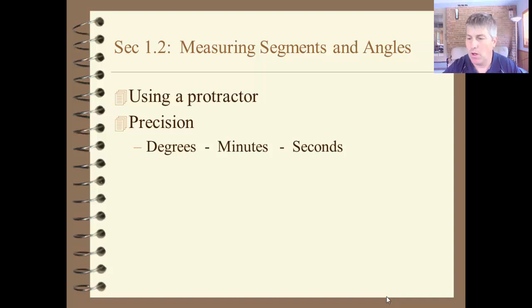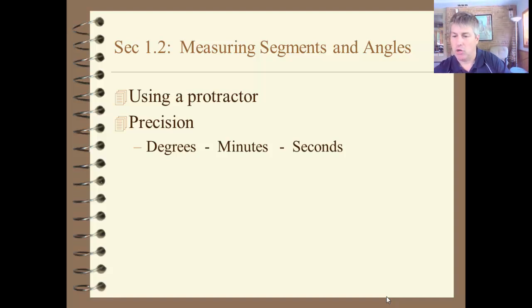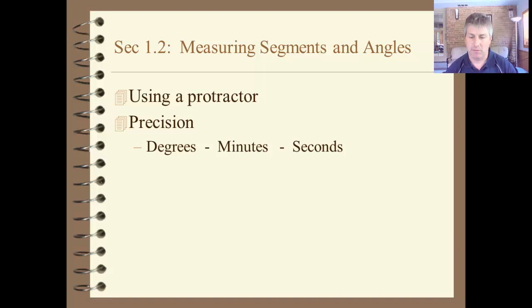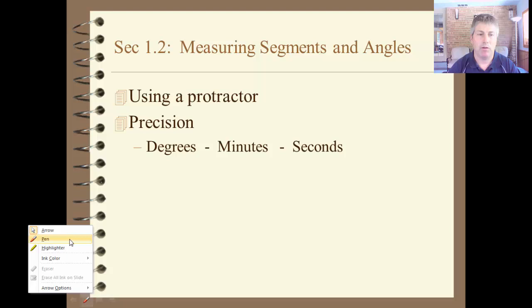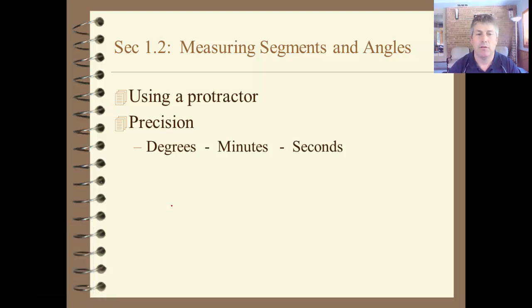Similar to what you might have on a clock, where you've got hours, minutes, and seconds, in geometry we have degrees, minutes, and seconds. To give you an example of what this might look like, we might have an angle that is 48 degrees, 39 minutes, and 24 seconds.